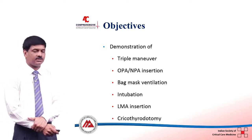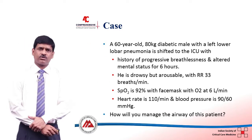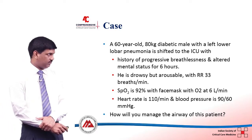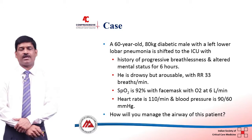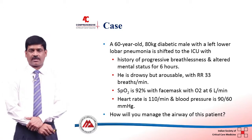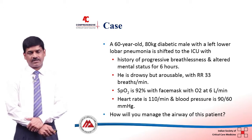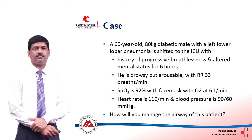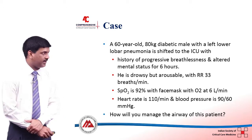Let us start with the triple maneuver. Let us go with a case discussion. A 60 year old 80 kg man who is a diabetic and a hypertensive has come to the ICU with a left lower lobe pneumonia. He is tachypneic with hypoxia, tachycardic with a heart rate of around 110 per minute, slightly low BP, and he is drowsy as well. How to handle this patient?